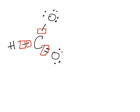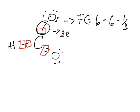Oxygen will get a full octet, so you'll write oxygen with eight electrons pretty much all the time. If there's only one bond, it will have six free electrons; if there are two bonds, it will have four free electrons. For the single-bonded oxygen, the formal charge is: six valence electrons minus six unbonded electrons minus half of two bonded electrons, which equals six minus six minus one — so that oxygen has a formal charge of negative one.